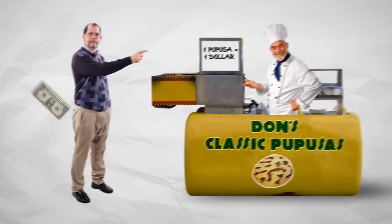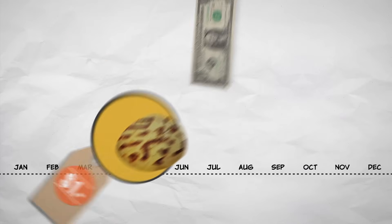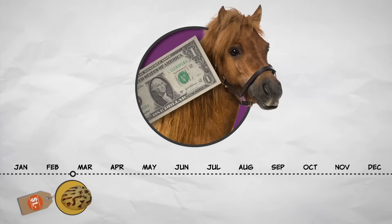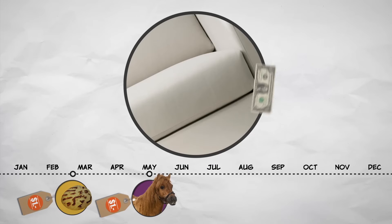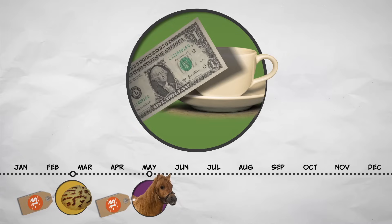Imagine that the dollar bill starts with Tyler, who buys a pupusa from Don, the street vendor. Don gives it to his daughter, who spends it on a pony ride at the fair. It ends up in the hands of Alex, who after losing it and then finding it in his couch cushions, buys a cup of coffee while on a road trip to see his favorite polka band.